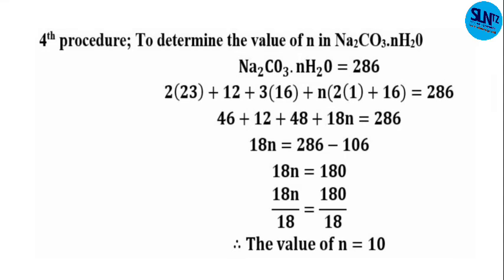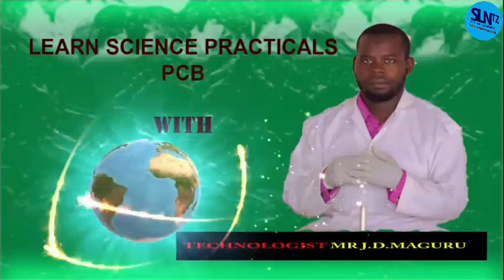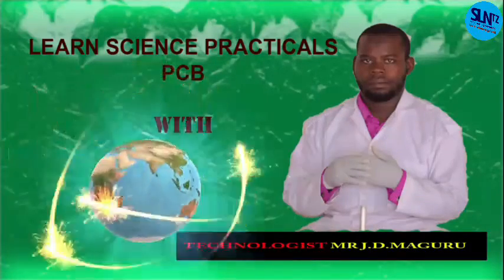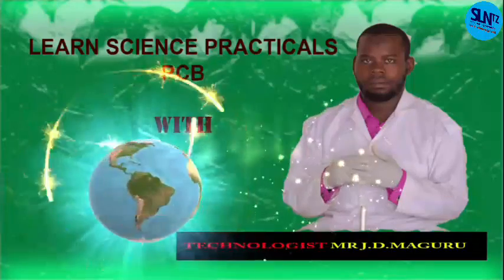Procedure four is to determine the value of n in hydrated sodium carbonate Na₂CO₃·nH₂O. From the molar mass of 286 g/mol, you subtract the known atomic masses of Na₂CO₃, and the remaining value gives you n. That is the end of our lesson for experiment number six — determination of water of crystallization of the hydrated alkaline solution sodium carbonate. Thank you for listening, and see you in the coming lesson.